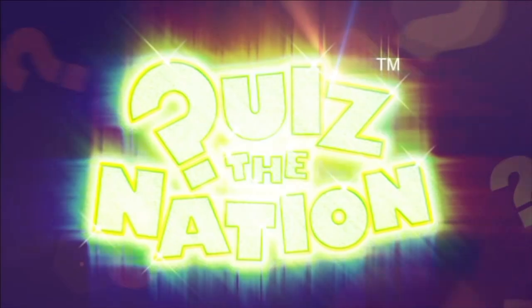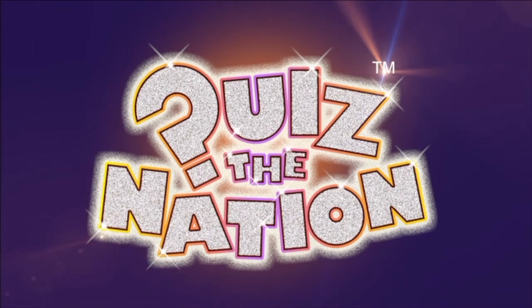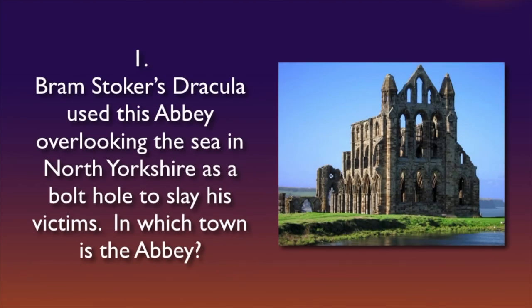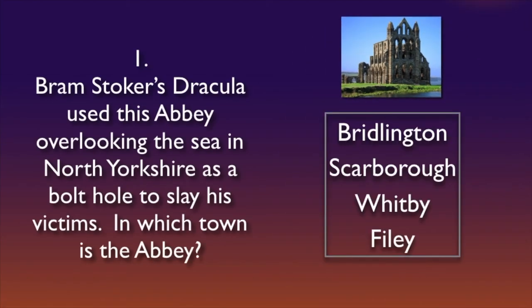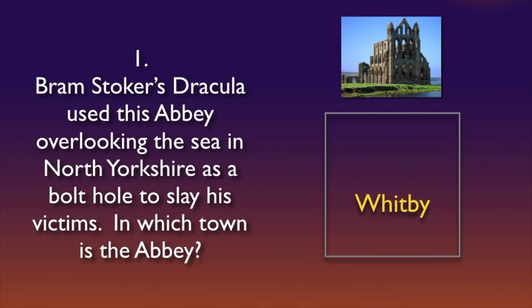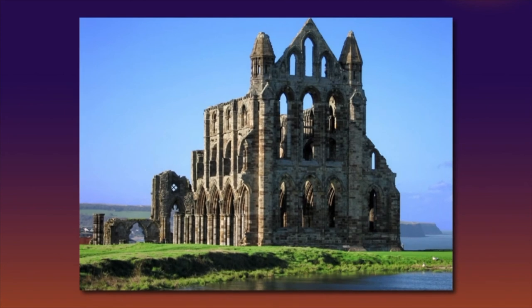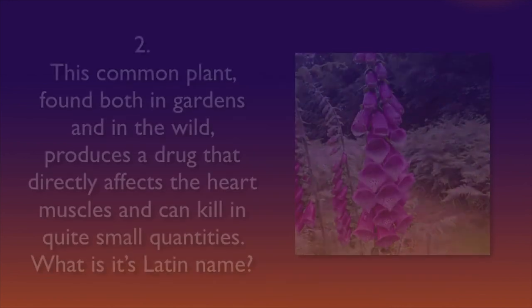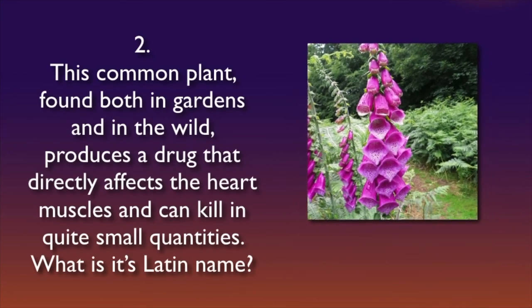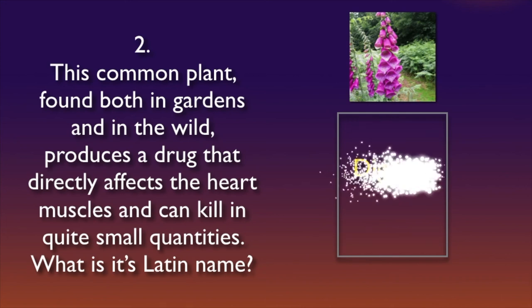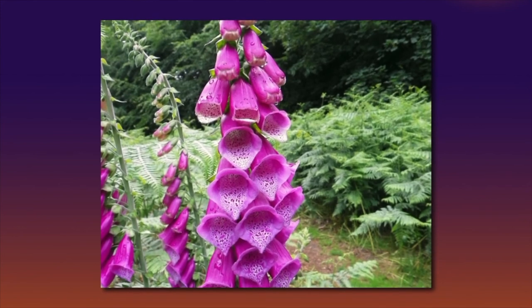Let's go with the answers to the final round. Question 1: the correct answer — which town is the abbey? It's Whitby. And Bram Stoker's 1897 novel brought the idea of an undead, bloodthirsty creature into popular culture. Question 2: the Latin name — Digitalis. And the common foxglove makes an ideal garden plant for shady positions.